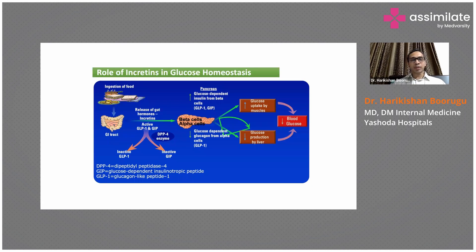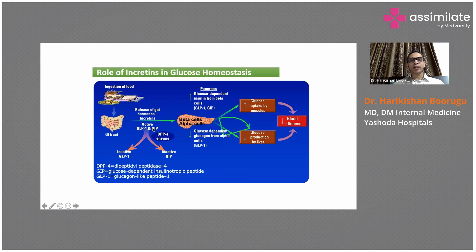What are these incretins? When we ingest food, the food enters the gastrointestinal tract. In the stomach and duodenum, there are cells called L-cells. When the intestine is stretched, these L-cells are stimulated and they produce hormones called GLP-1 and GIP — glucagon-like peptide-1 and glucose-dependent insulinotropic peptide. These are called incretins.